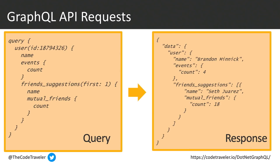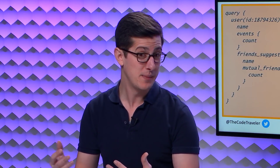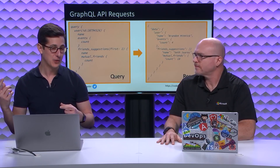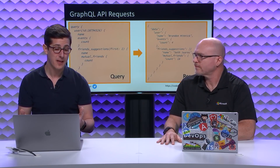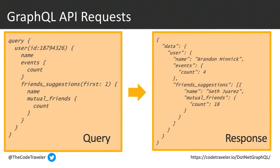This solves both problems. It solves the problem of what was called overfetching, where maybe an API returns a bunch of data but we only need two or three fields — with GraphQL it will only give us the data we ask for. And we're actually nesting objects. For example, I'm looking for information about a specific user — I pass in the user ID, tell me that user's name, the upcoming events count, tell me that user's friend suggestions but just the first one, and for that friend give me that person's name and mutual friends count.